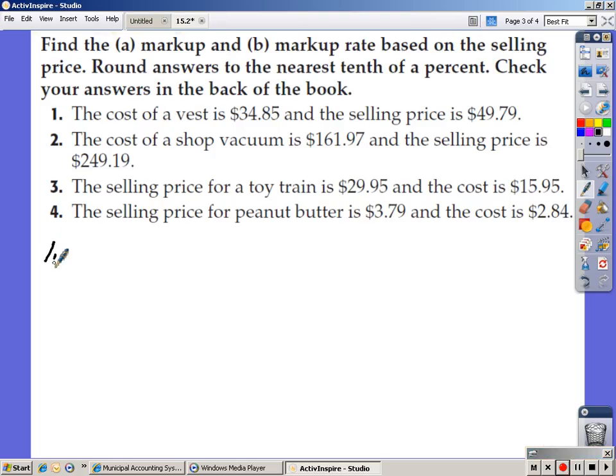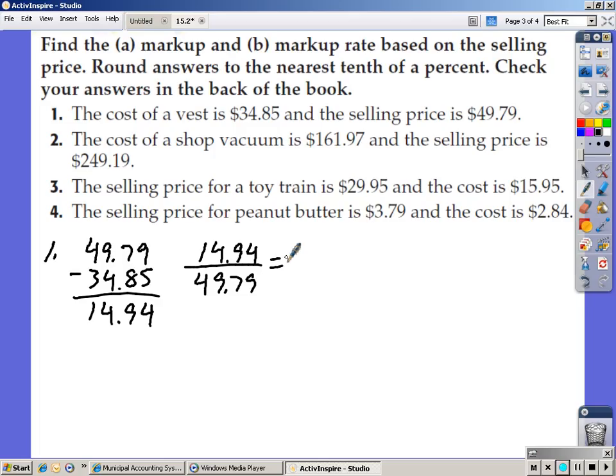So let's run through these real fast. Number one, the cost of a vest is $34.85. The selling price is $49.79. So $49.79 minus $34.85. Plug that in the calculator. You get $14.94. $14.94 divided by your selling price of $49.79 gives you .30, so 30% is number one.